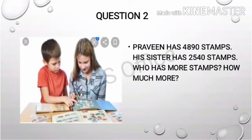So here they have asked two questions: who has more stamps, and how much more? For the first question, you have to compare both the numbers. Praveen has 4,890 and his sister has 2,540. Naturally, 4,000 is more than 2,000, so Praveen has more stamps — 4,890 is more. Next, to find how much more, you have to subtract both the numbers.